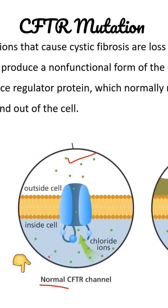If the CFTR protein does not function properly — mutant CFTR — then the balance of chloride and fluid is disrupted, causing mucus in various organs to become thick and sticky. And that will lead to lung infection, poor digestion problems, and some problems in the reproductive system.